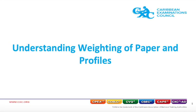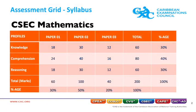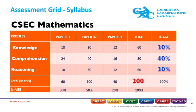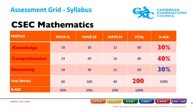Understanding the weighting of paper and profiles. Let us take another look at a table in the CSET mathematics syllabus page 5 under the caption 'Weighting of Paper and Profiles.' The maximum score to be earned by a candidate is 200 marks. The knowledge profile contributes 30% of the candidate's final grade, the comprehension profile contributes 40%, and reasoning contributes 30%. Paper 1, paper 2, and paper 3 contribute 30%, 50%, and 20% respectively.